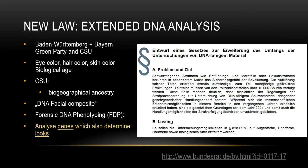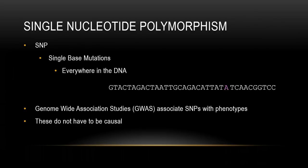With forensic DNA phenotyping, you check for single nucleotide polymorphisms, also called SNPs. These are single base mutations — for example, an A versus a C at a specific position. They can be anywhere in the DNA. Using genome-wide association studies, or GWAS, you can associate SNPs with a phenotype: people who have a C might look different than people who have an A. However, these SNPs do not have to be causal — they can just be a statistical correlation.